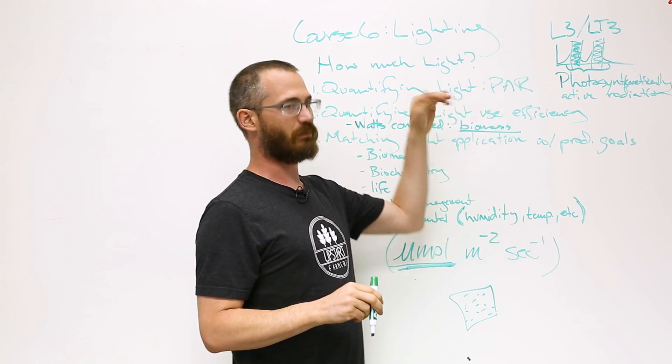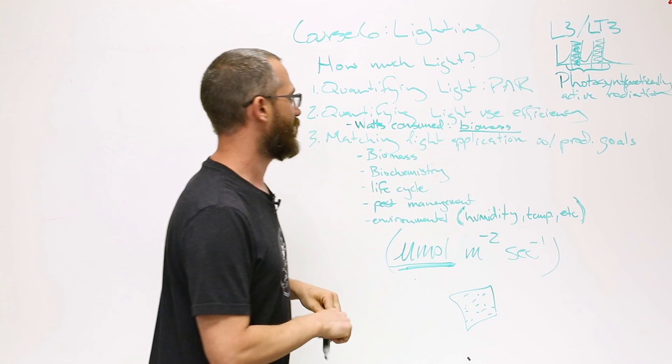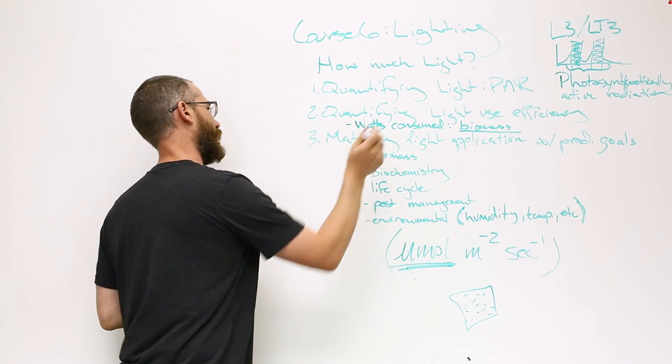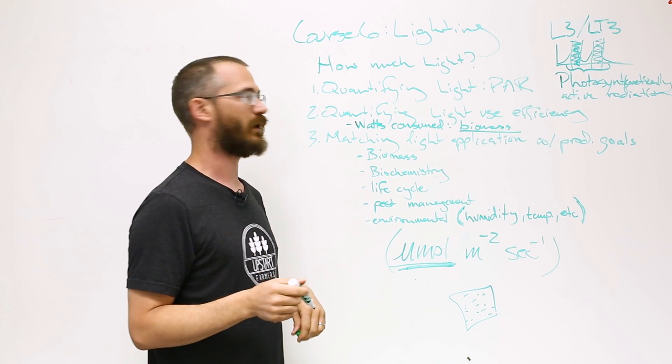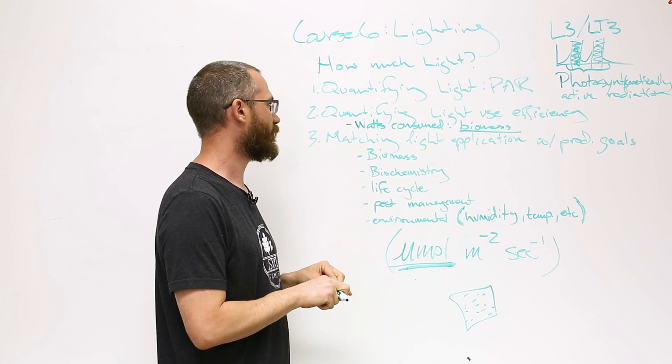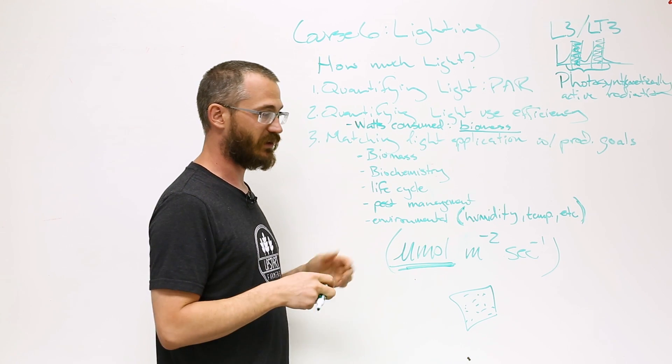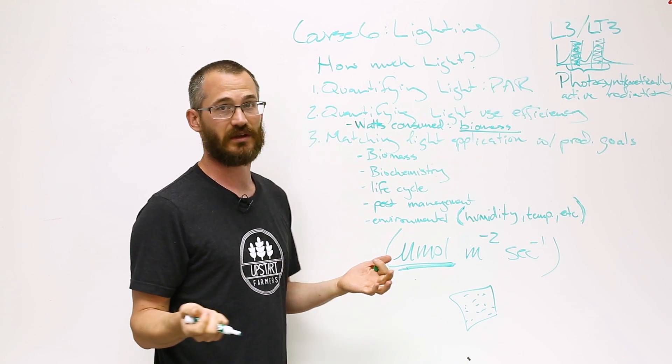Basically, you want to be producing biomass that you can sell. The amount you can produce as a function of the watts you consume basically tells you what your light use efficiency is.